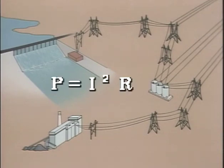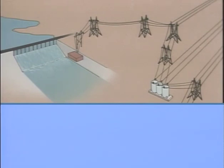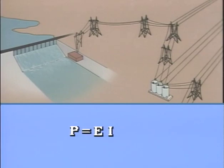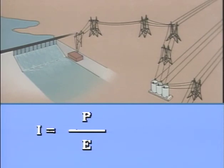By using the equation P equals I squared R, we can determine the power loss for each system. For each system, we already know the voltage — 250 kilovolts and 500 kilovolts — the power, 50 megawatts, and the resistance, 5 ohms. In order to determine the power loss for either system, we first need to find the current. Let's find the current for the 250 kilovolt system first. We'll use the power equation P equals E times I and rearrange it to solve for current: I equals P divided by E. Substituting the known values, the equation reads I equals 50 megawatts divided by 250 kilovolts.